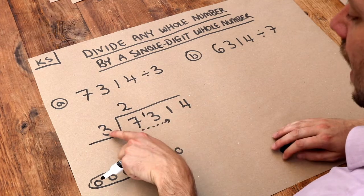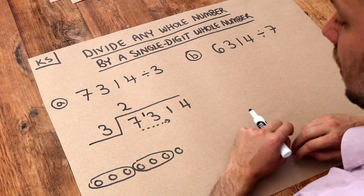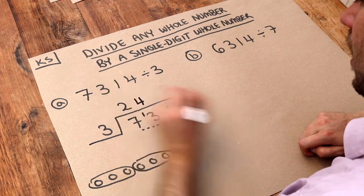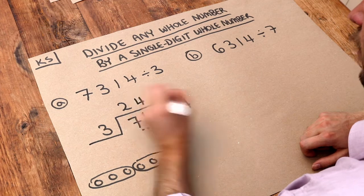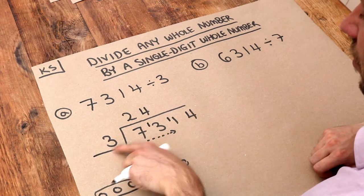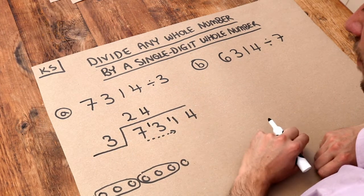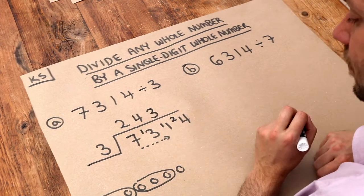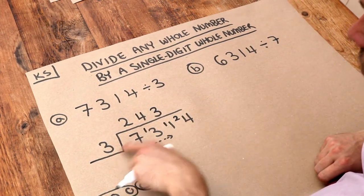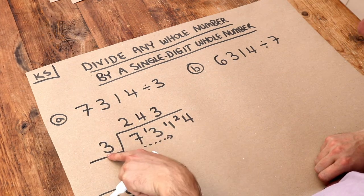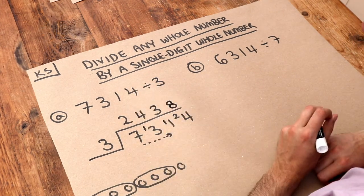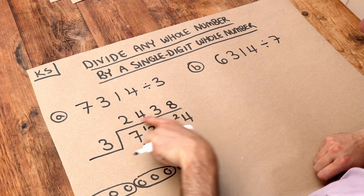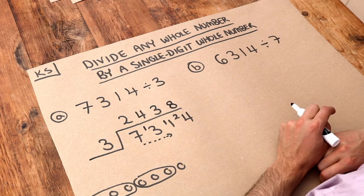Then we repeat the process. How many times does three go into 13? It goes in four whole times, and again we have a remainder of one. How many times does three go into 11? It goes in three whole times, remainder two. And finally, how many times does three go into 24? 24 divided by three is eight times exactly, with no remainder. So that is the answer — each person would get 2,438 sweets.